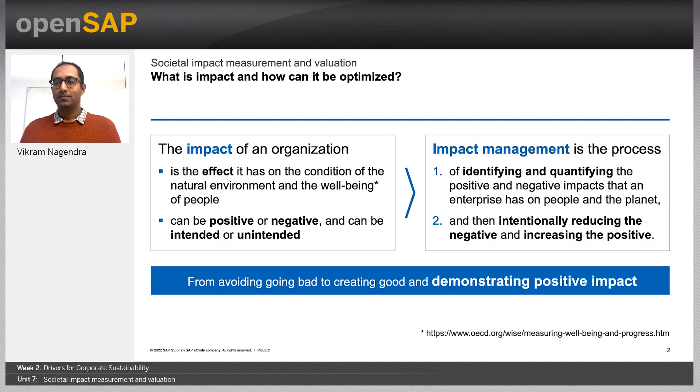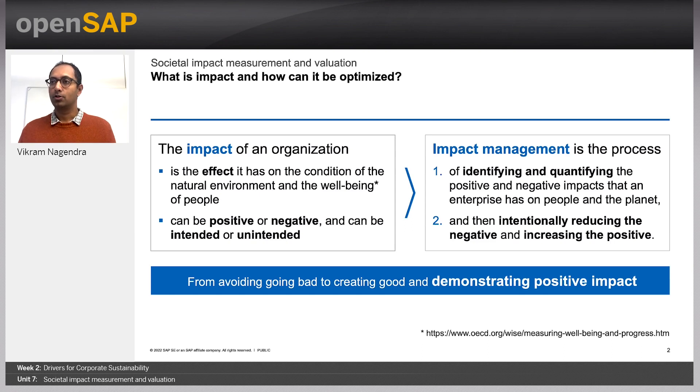Welcome to week two, unit seven — the last unit of this week. My name is Vikram Nagendra, and in this unit, we will dive a little deeper into the topic of impact measurement and valuation. According to the OECD, the impact of an organization is the effect it has on the condition of the natural environment and the well-being of people. These impacts can be positive, meaning it improves the condition, or negative, meaning it worsens the condition. These impacts can be created intentionally through business decisions or unintentionally as indirect or induced effects.